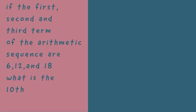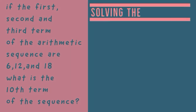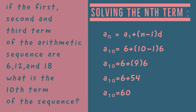Let's try this example. First, we have to find the common difference by subtracting the first term from the second term: d equals 12 minus 6, so d equals 6. For the nth term, we use a sub n equals a sub 1 plus (n minus 1) times d. Substituting: a sub 10 equals 6 plus (10 minus 1) times 6. Solving the parenthesis: 10 minus 1 equals 9; then 9 times 6 equals 54. So a sub 10 equals 6 plus 54, which gives a sub 10 equals 60.